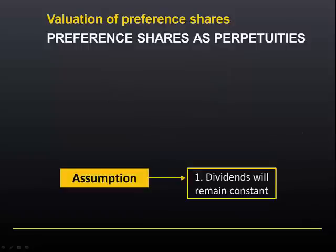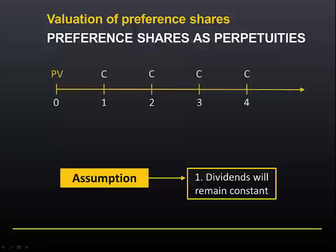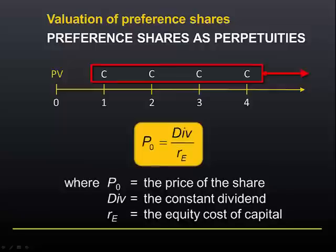We will use the first of these assumptions in calculating the value of a preference share. That's because the dividends you receive from a preference share constitute a perpetuity — the same cash flow repeated every period forever. This is essentially the formula for the present value of a perpetuity, with the variables changed so that it specifically applies to the value of a preference share.